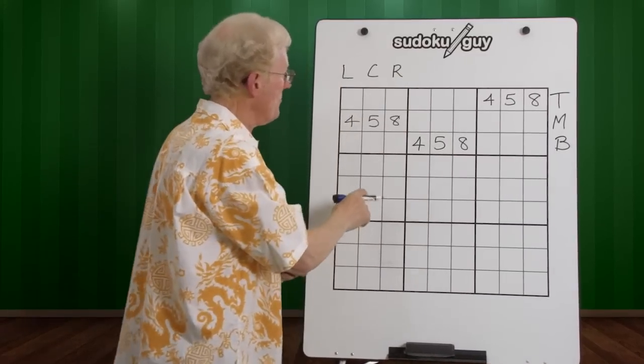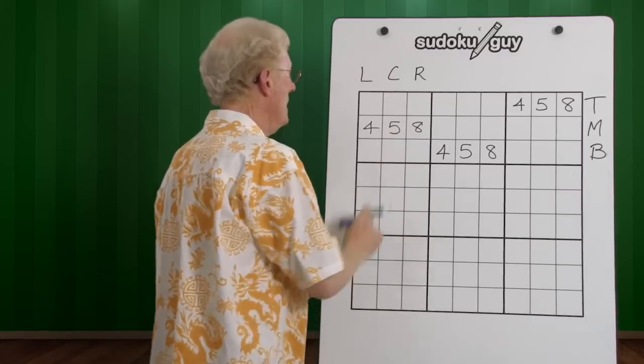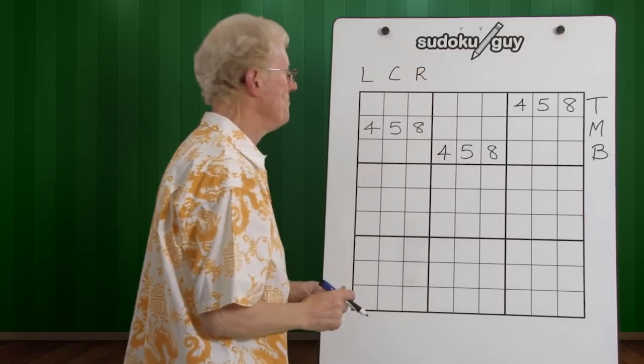LCR refers to the vertical blocks, a left, a center, and a right column.